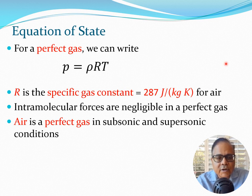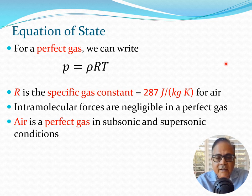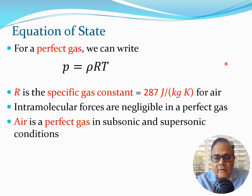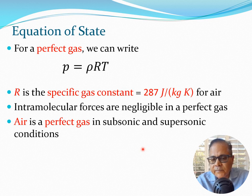What is a perfect gas? It is a gas in which the intramolecular forces are negligible. In reality no gas is truly perfect, but fortunately air is pretty close, because nitrogen and oxygen — the primary constituents of air — are essentially close to perfect gases. In subsonic or supersonic conditions we can generally use this equation without any problem, but at very high speeds chemical reactions in the flow may cause departures.